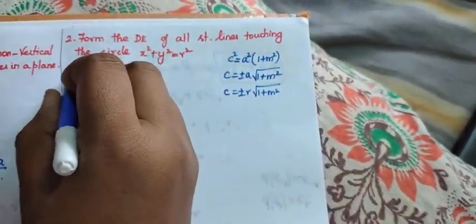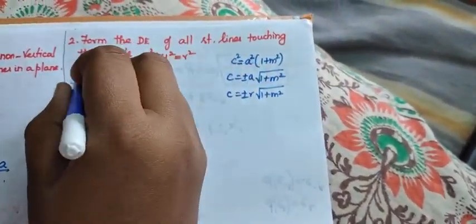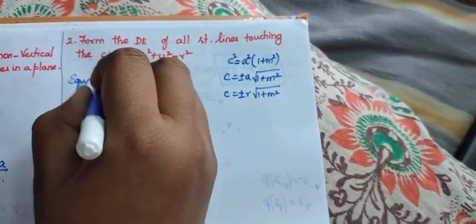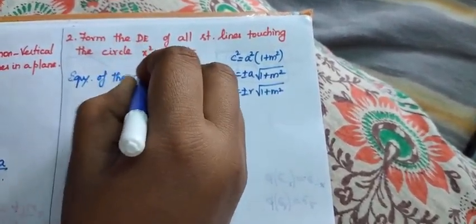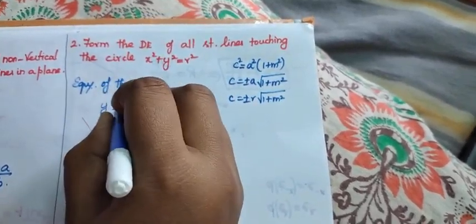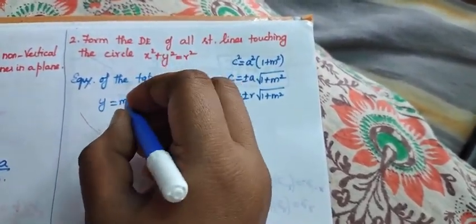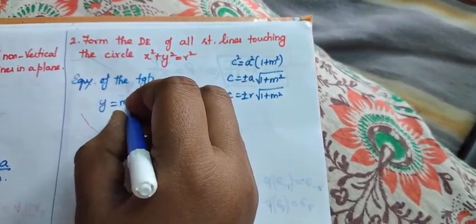Now, what is the equation of the tangent? The straight line touching the circle, the equation of the tangent is y equals m x plus c.